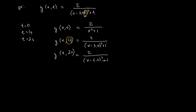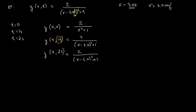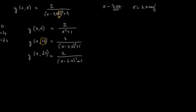Let's represent this pulse function graphically to understand what it represents. In the function, x minus 3t — this tells us the velocity v equals 3.0 centimeters per second. We can also see that the shape is not changing over these two seconds. To graph the three functions at time equals zero, one second, and two seconds, x is measured in centimeters.